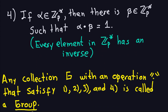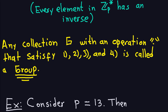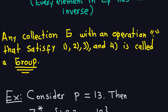The reason I went over those four properties is this: if you have any collection G with some operation that satisfies properties one through four — closure, associativity, identity element, and inverses — that collection is called a group. In our case Z_p* with multiplication modulo p is a group. We'll come back to groups later in the class; for now let's look at a concrete example to verify that those four properties hold.